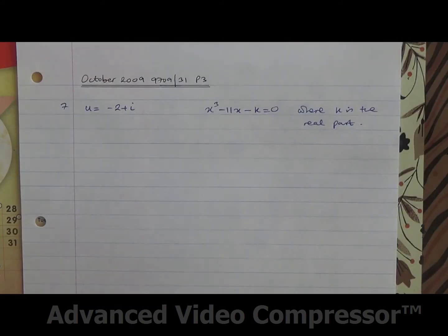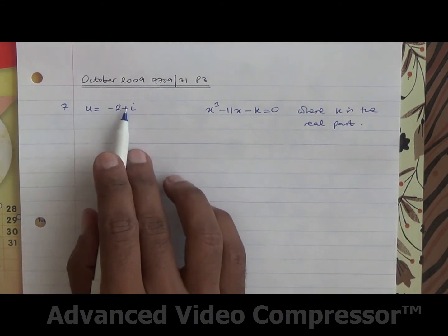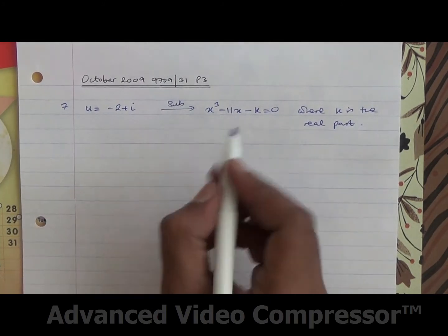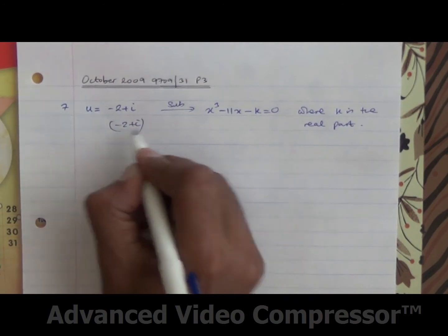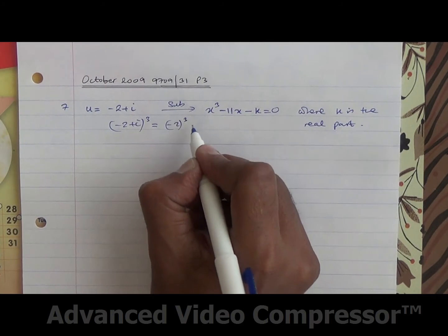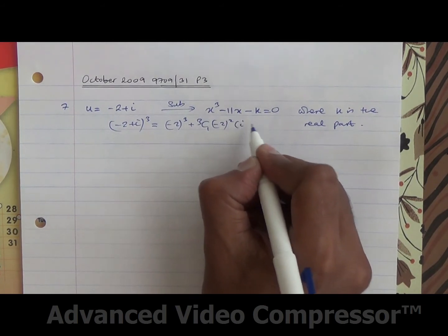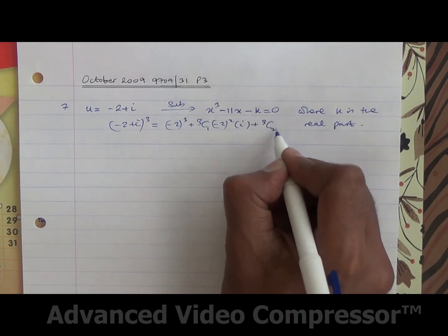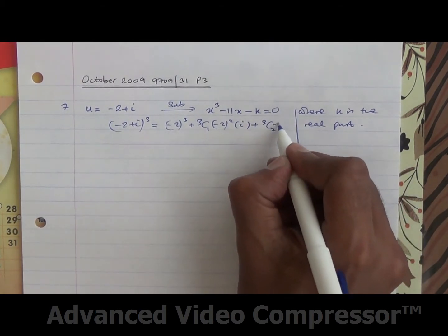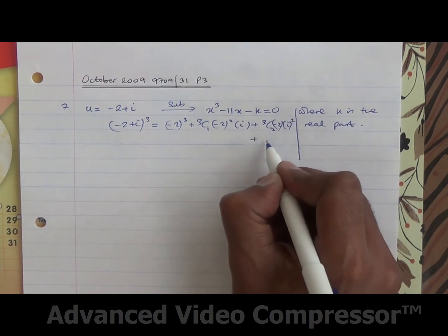OK, for the first part of the question, this is the equation, this is the complex number, and k is the real part. So we need to take this and substitute in here. So minus 2 plus i to the cube turns out to be minus 2 to the cube, plus 3 choose 1, minus 2 squared times i, plus 3 choose 2, times minus 2, i squared, plus i cubed.